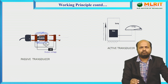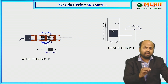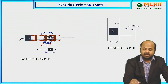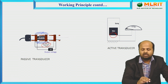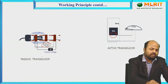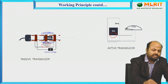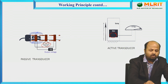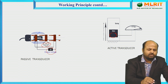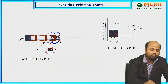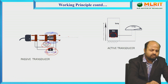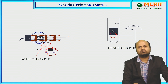Here we will see the working principle of passive and active transducers. In a passive transducer, we need some external power supply for its operation. An example of a passive transducer is the LVDT, which has a coil and core. When the core moves, the voltage changes due to relative change in the magnetic field, and a voltage is generated. The displacement of the core is measured in terms of voltage.